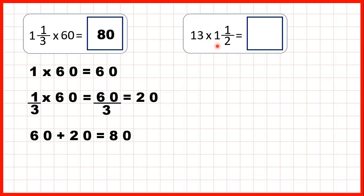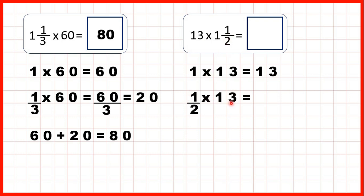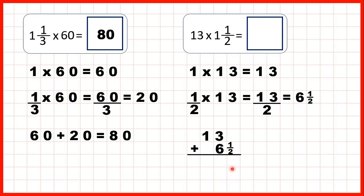Now 13 times 1 and a half. So 13 times 1 is 13. And we can work out 13 times a half — the denominator stays the same, and 1 times 13 is 13, so we have 13 halves. We can change that back into a mixed number by dividing: 13 divided by 2 is 6 remainder 1, because 6 times 2 is 12 and we need 1 more to get to 13. The denominator stays the same. So now we add 13 plus 6 and a half. 13 plus 6 is 19, and the answer is 19 and a half.